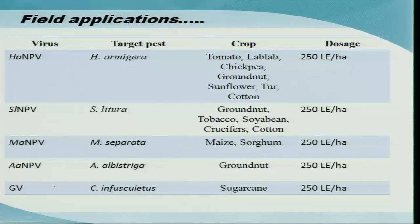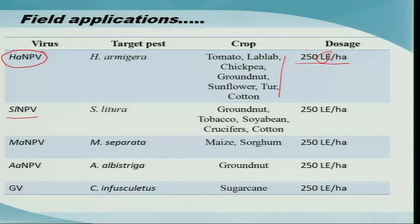A key characteristic of these viruses is that they are quite specific to a particular species — a viral group specific to one species cannot be used against another, which is a major advantage. For field application, NPV against Helicoverpa armigera is referred to as HaNPV and can be used at 200 LE (larval equivalents) per hectare in vegetable and field crop ecosystems. Similarly, Spodoptera litura NPV is used in groundnut, tobacco, soybean, or cotton ecosystems at the same rate. Mythimna separata NPV and Amsacta albistriga NPV are also commonly produced and marketed.